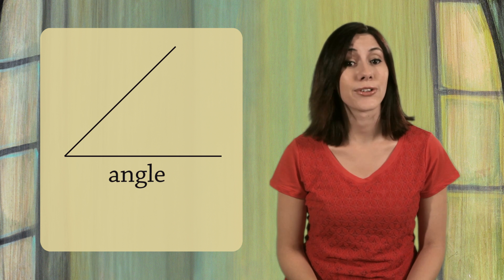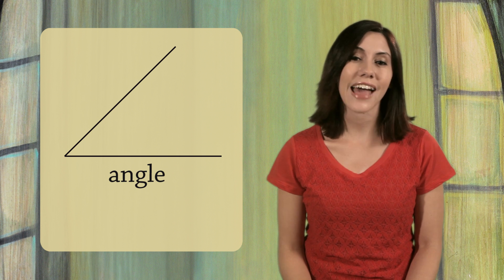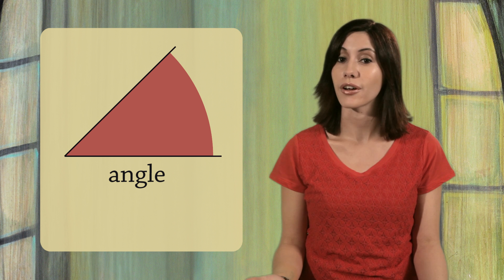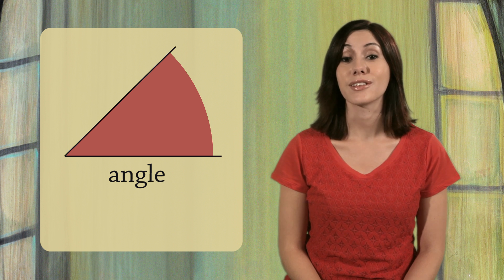When two lines meet at a point, they form a corner. The mathematical word for a corner is an angle. An angle measures how much you have to rotate one line to reach the other. We mark this angle with a little arc.